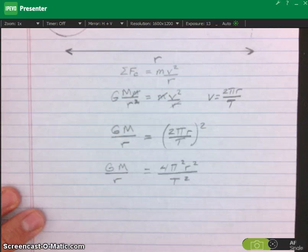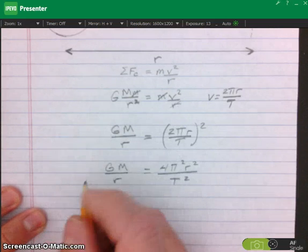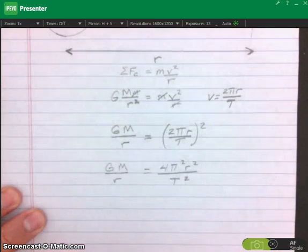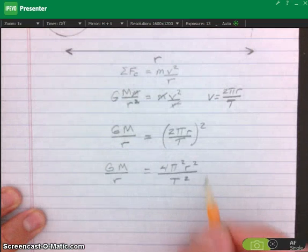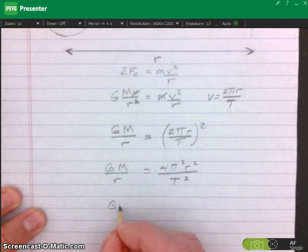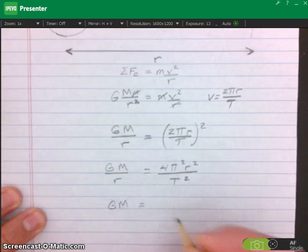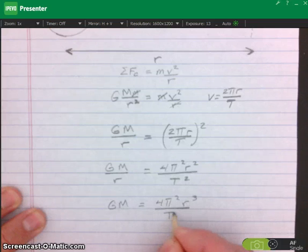That equals GM over R. Now I'm going to multiply both sides of the equation by R as I did earlier. So multiply this by R, multiply that by R, and end that with GM, which would be equal to 4 pi squared R cubed over T squared.